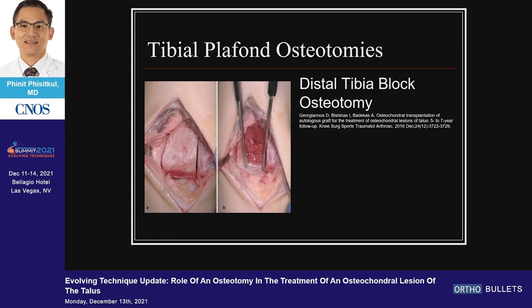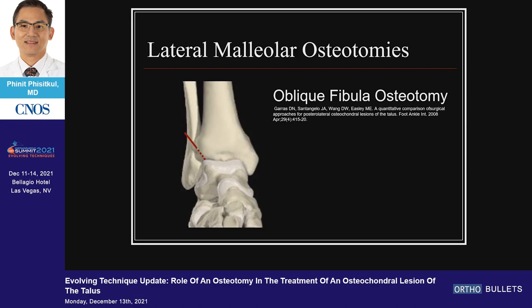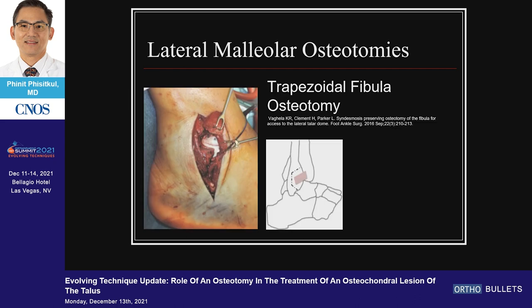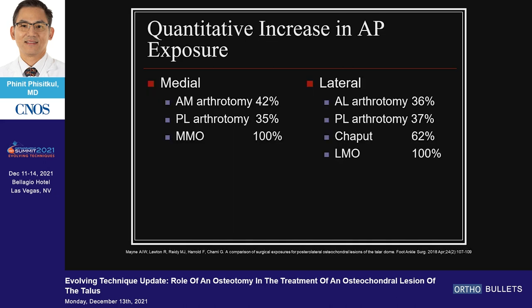You can make a bigger block to remove the distal tibia bone block. On the lateral side, oblique fibular osteotomy is my go-to approach as well — make sure you preserve the ankle syndesmosis. You can choose to take the anterior part of the distal fibula, called trapezoidal fibular osteotomy, and flip it along the AITFL. Overall, medial or lateral side, if you do a bone cut, you can achieve up to 100% approach with the oblique-type osteotomy.